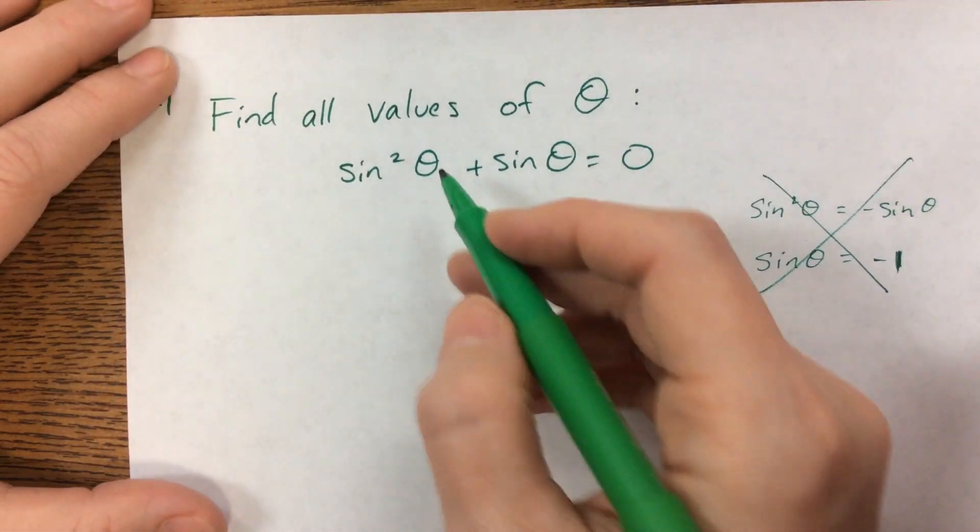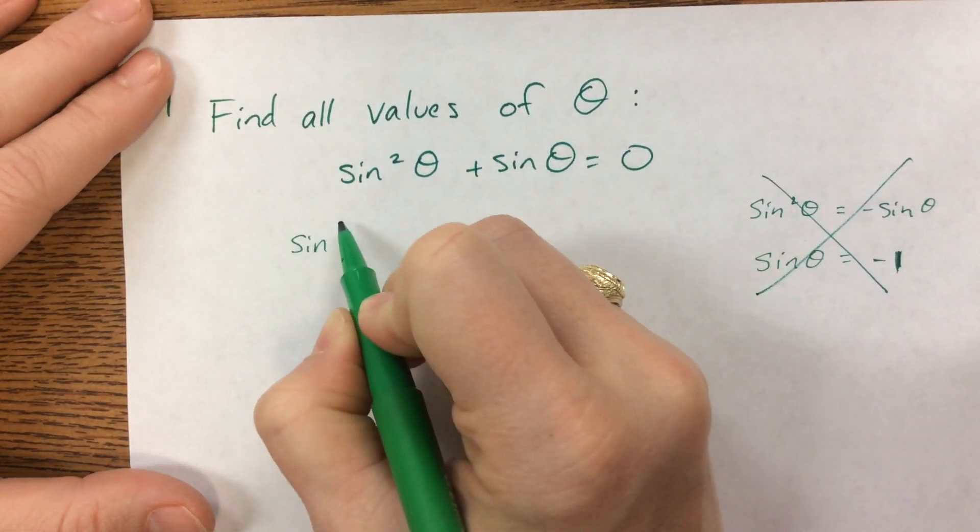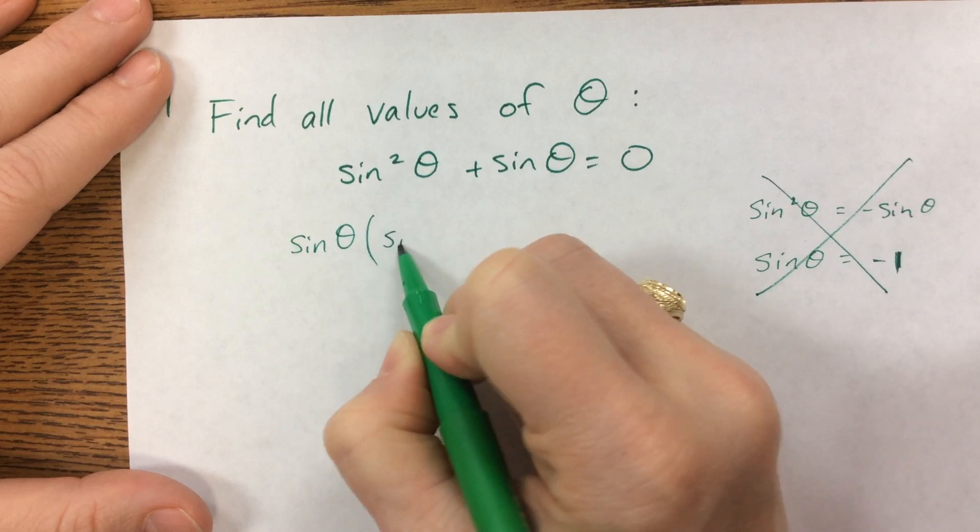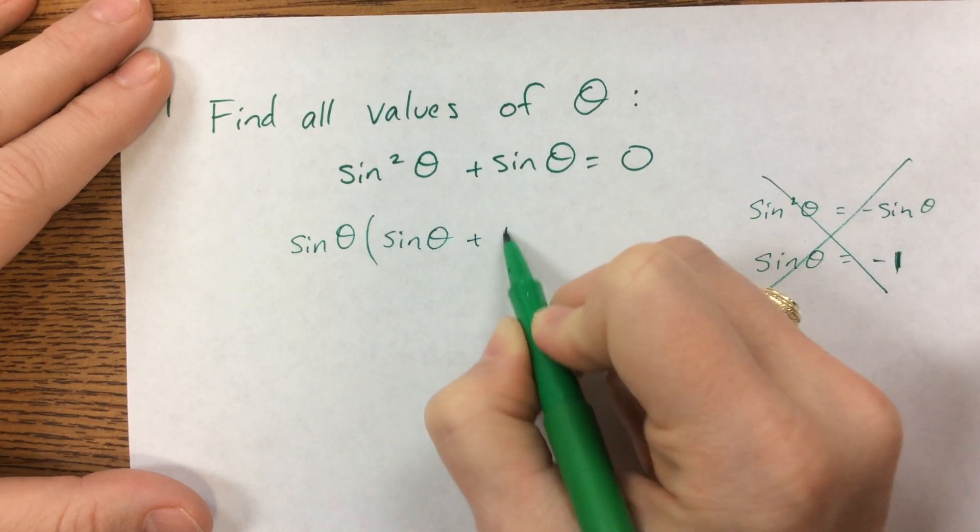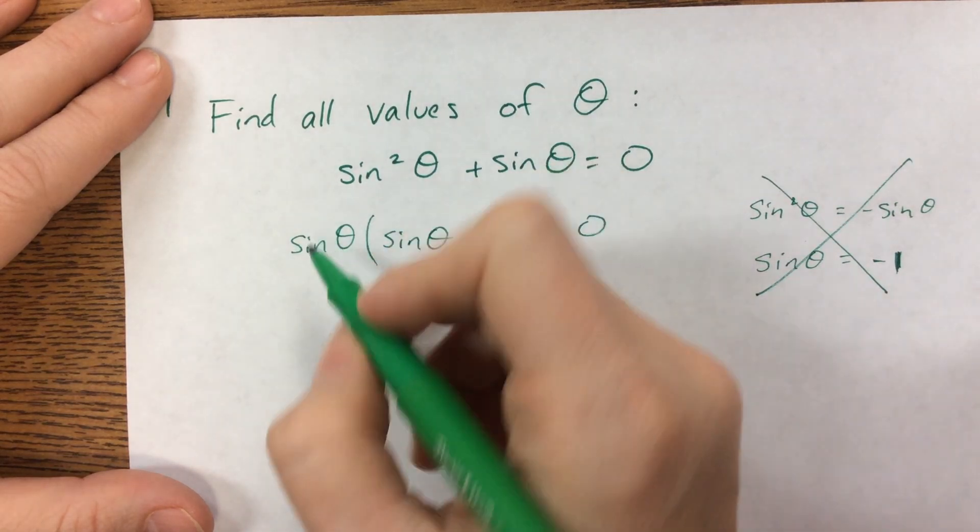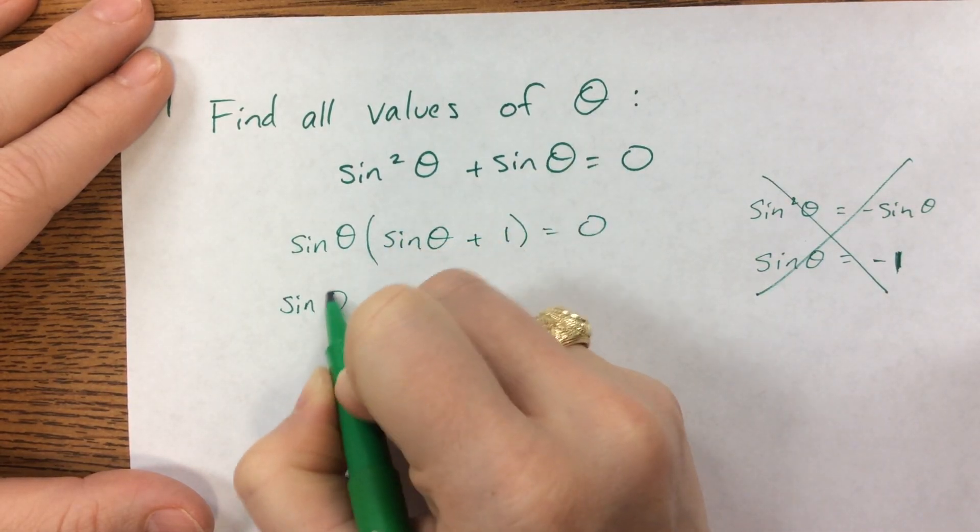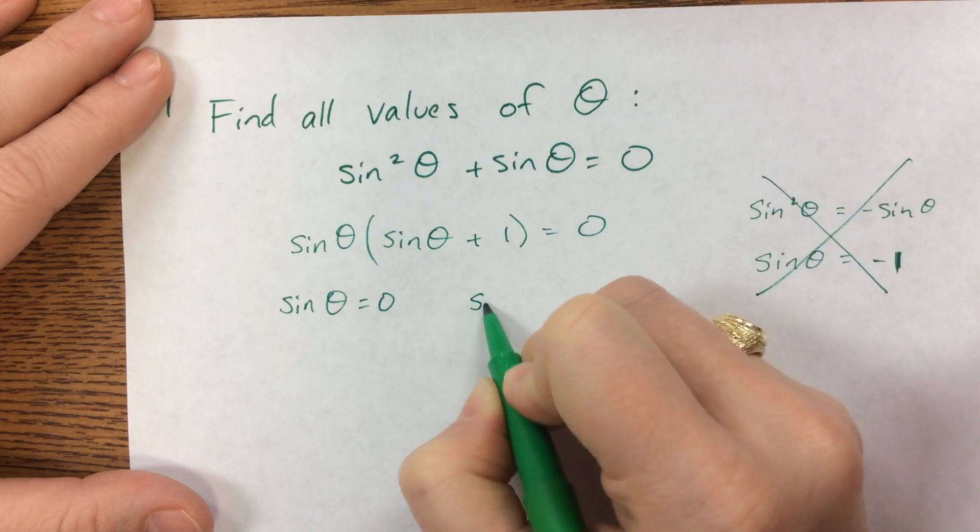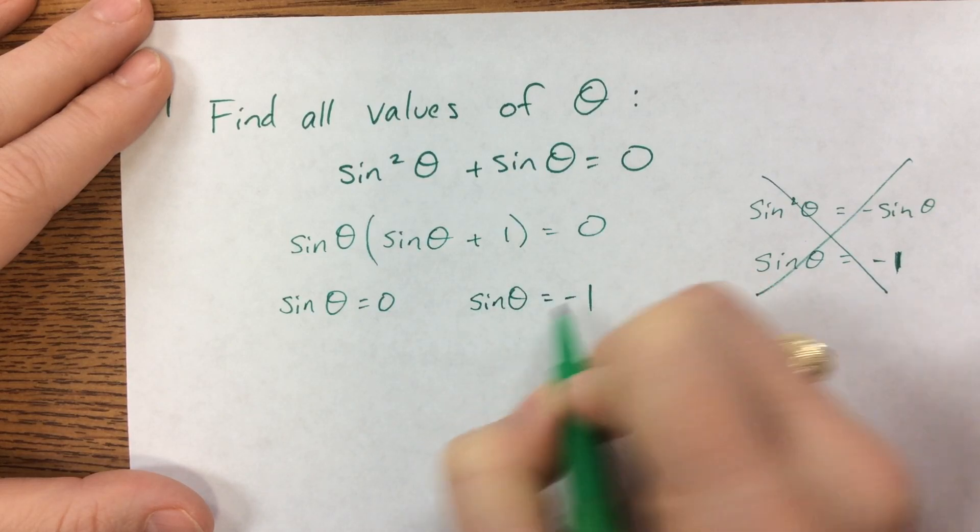We want to make sure we factor. So I'm going to factor out a sine of theta. And now I've got two situations that can give me a solution. One of them is that sine of theta equals zero, and the other one, sine of theta will equal negative one.